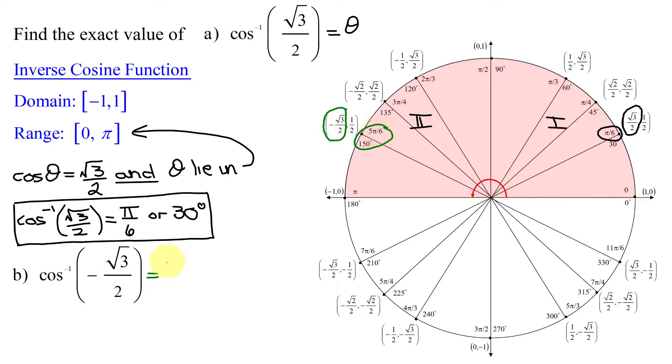So the inverse cosine of negative the square root of 3 over 2 equals 5 pi over 6 in radians, or 150 degrees.